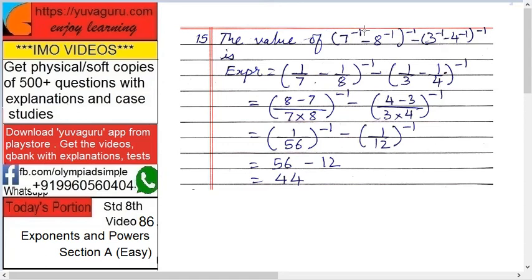The value of 7 raised to minus 1 minus 8 raised to minus 1 the whole raised to minus 1, minus 3 raised to minus 1 minus 4 raised to minus 1 the whole raised to minus 1 is.